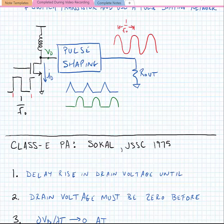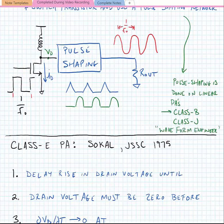The bandpass network filters out all the harmonics from these non-sinusoidal waveforms, leaving us with a sinusoid being driven into R-out with a period of roughly one over F-naught, which is the input frequency. This pole shaping is also done on linear power amplifiers such as the class B and class J amplifier, and we're starting to see the term waveform engineering used for these pole shaping networks that provide a specific shape of the drain current and drain voltage waveforms at the transistor.